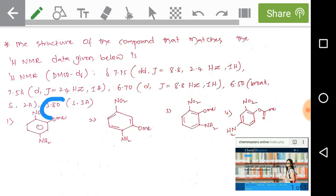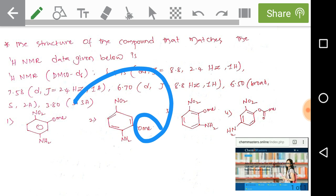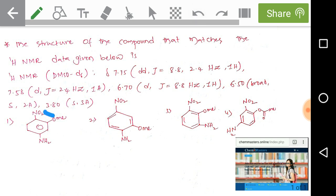If you look at the value 3.80 to 3.90 with singlet, 3 hydrogens — almost 99% that indicates the presence of a methoxy group in an unknown organic compound. This is the easiest to pick up: the presence of a methoxy group.